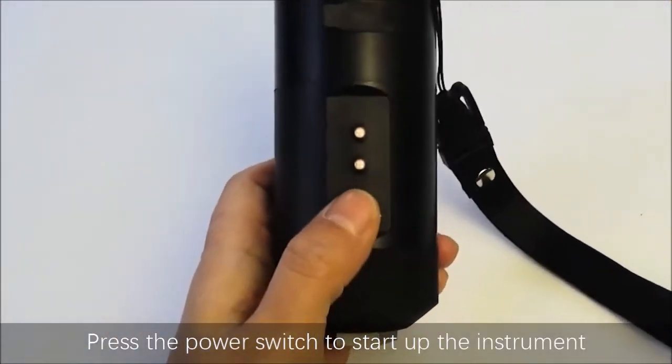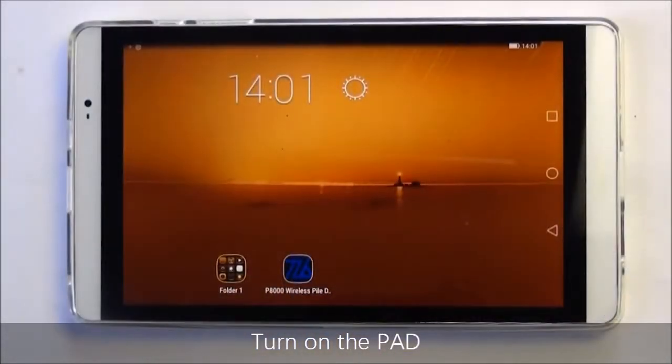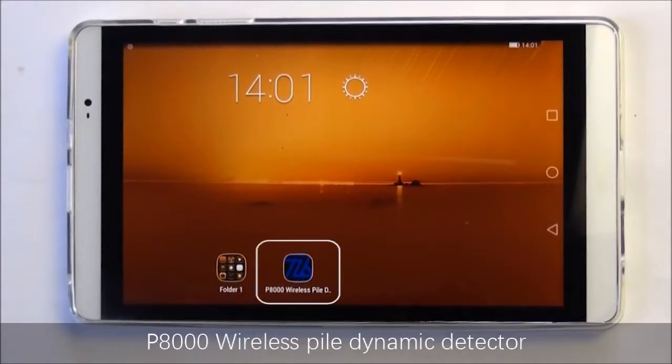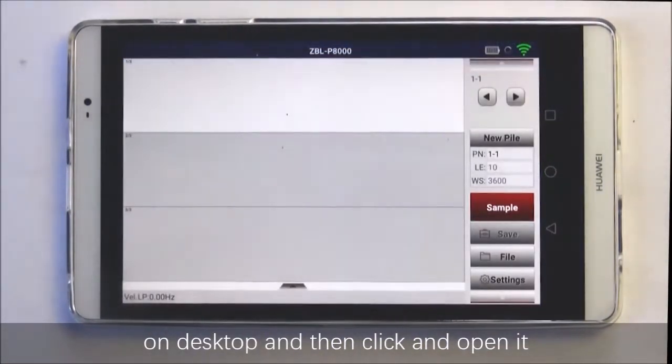Press the power switch to start up the instrument. Turn on the pad and find the application PH-8000 or Wireless Pile Dynamic Detector on the desktop, then click and open it.